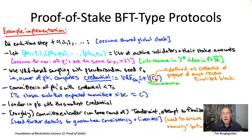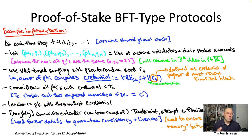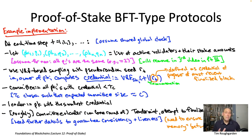In the last video, we gave a high-level description of what a proof-of-stake BFT-type blockchain protocol might look like. As we talked through that description, we noticed various points that were underspecified — various points where it was clear there were some missing details. In this video, I want to take three of the issues that come up with the approach we discussed in the last video and talk about how you address them.